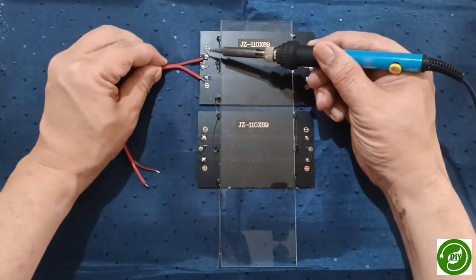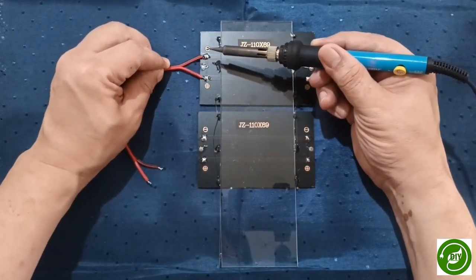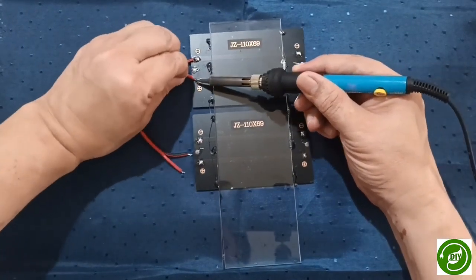Connect the mini solar panels in parallel. The red wire indicates the plus terminal, and the black wire indicates the minus terminal.